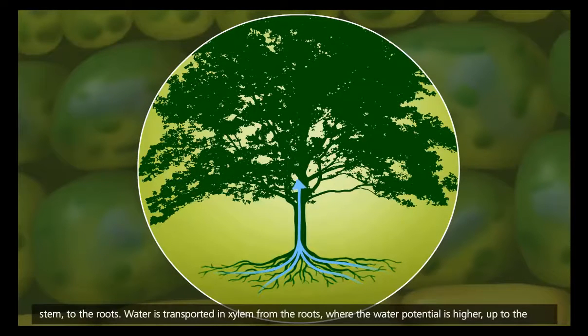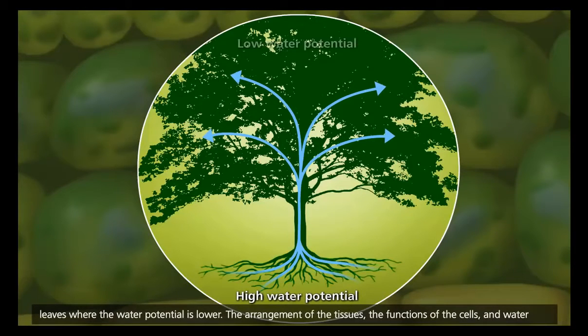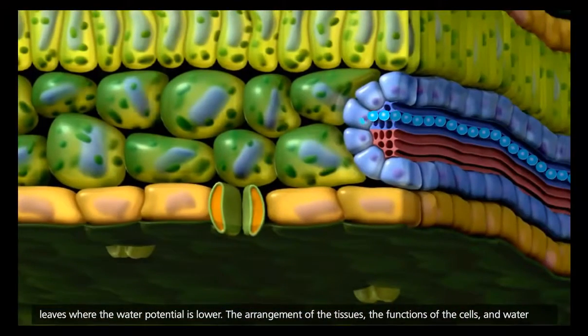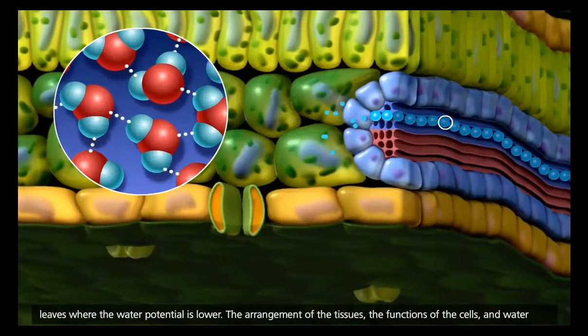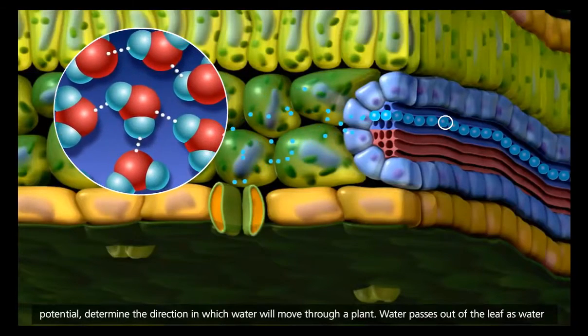Water is transported in xylem from the roots, where the water potential is higher, up to the leaves, where the water potential is lower. The arrangement of the tissues, the functions of the cells, and water potential determine the direction in which water will move through a plant.